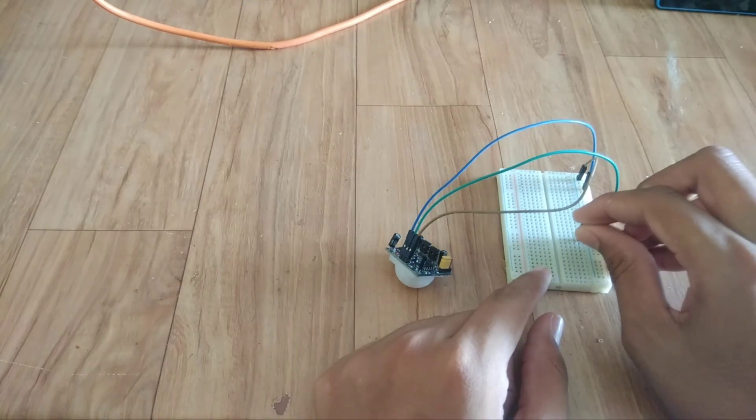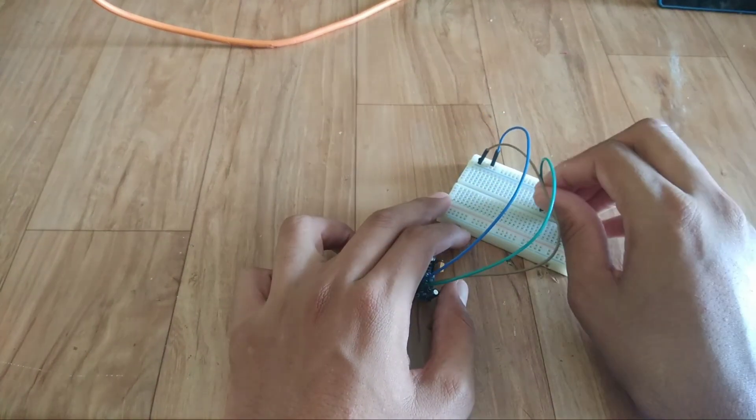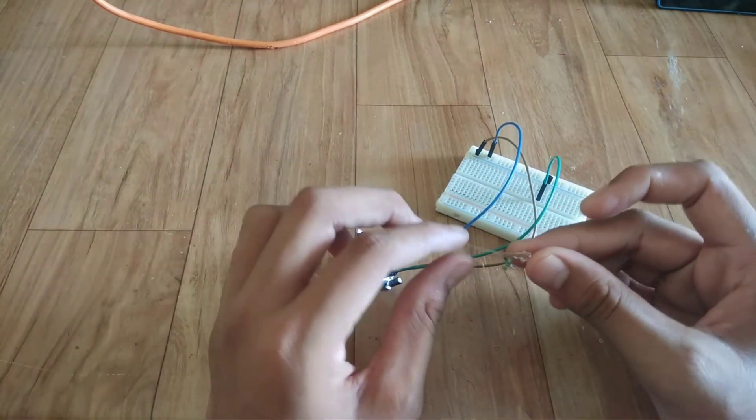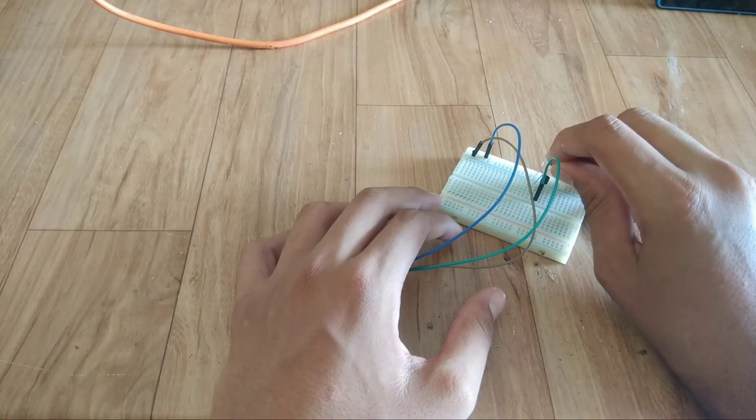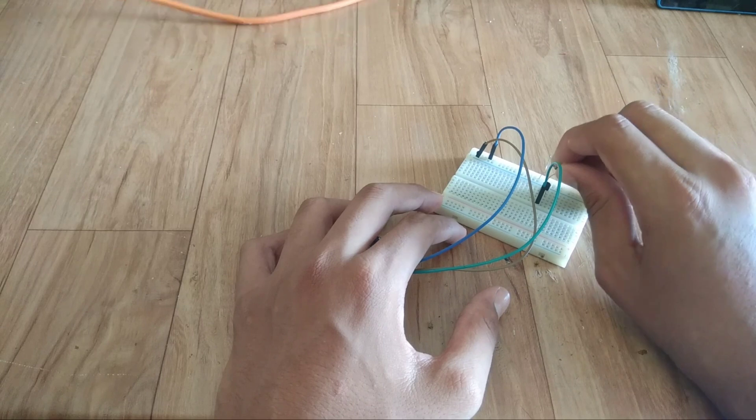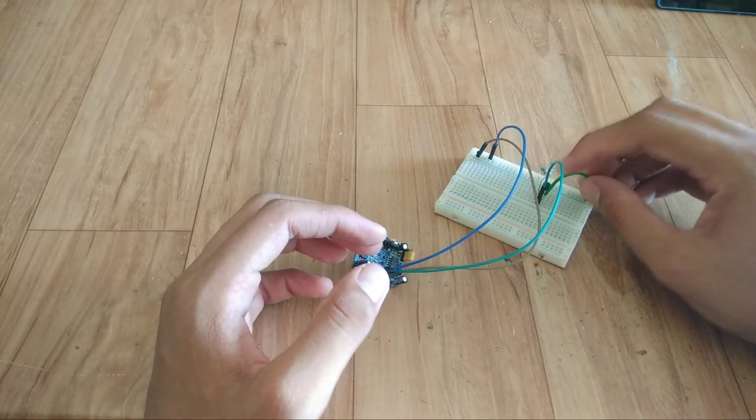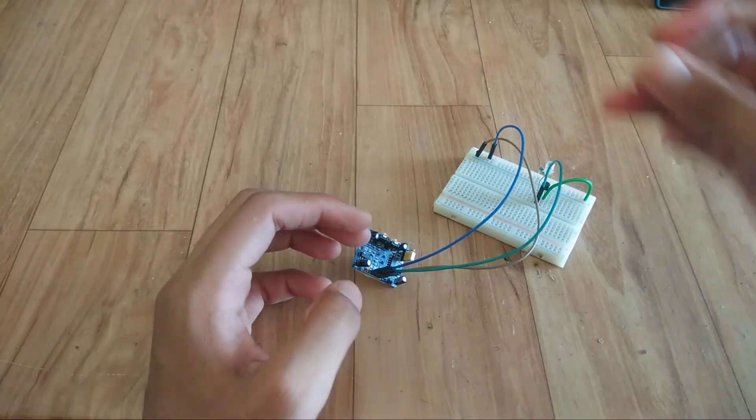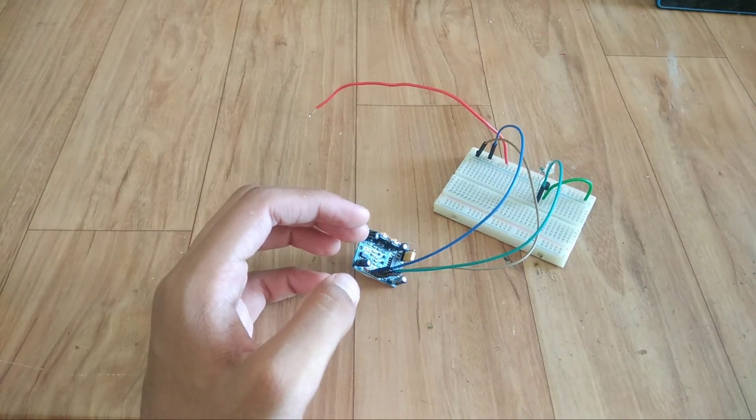I will use BC547 transistor. You can use any NPN transistor. Then take one LED with current limiting resistor and connect its positive terminal to VCC. Then negative terminal to collector of transistor. And connect emitter to ground.